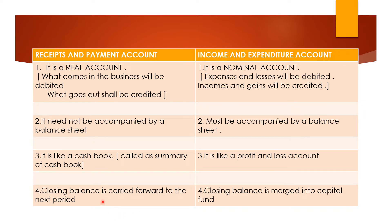The fourth point states that the closing balance is carried forward to the next period in the receipt and payment account — whatever closing balance is shown in your account will be carried forward to the next period. But in income and expenditure account it is merged into the capital fund, just the way we treat the profit and loss account — you don't carry it forward, you put it into your capital fund.